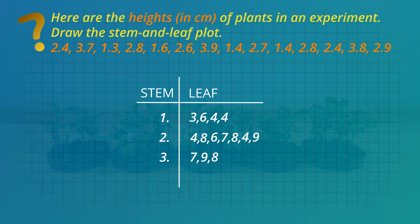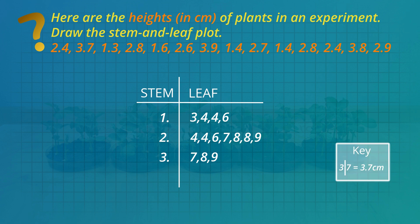Next, the leaf numbers are rearranged from smallest to largest. Finally, the key is an example to explain the graph.